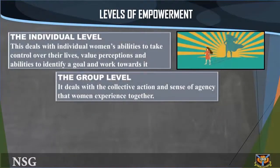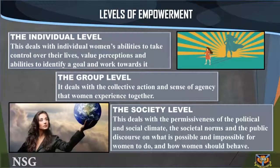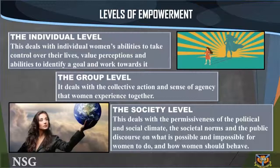Levels of empowerment. Generally, empowerment occurs at three levels. The individual level: this deals with the individual woman's ability to take control over her life, her perception about her own value, and her ability to identify a goal and work towards it. The group level: this deals with the collective action and sense of agency that women experience together. The society level: this deals with the permissiveness of the political and social climate, the societal norms, and the public discourse on what is possible and impossible for women to do and how women should behave.